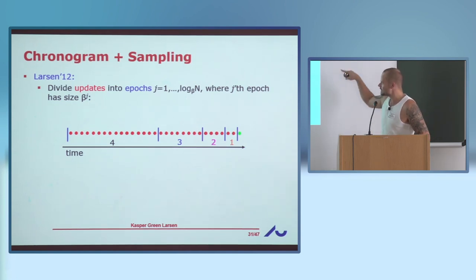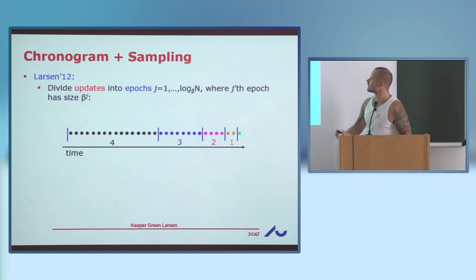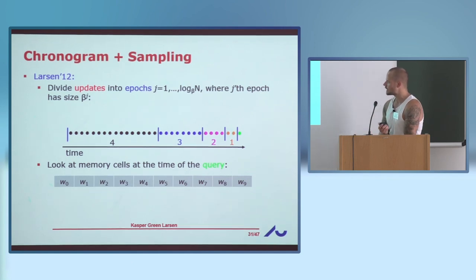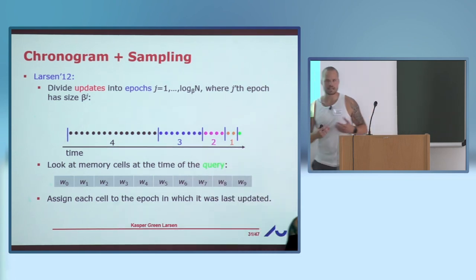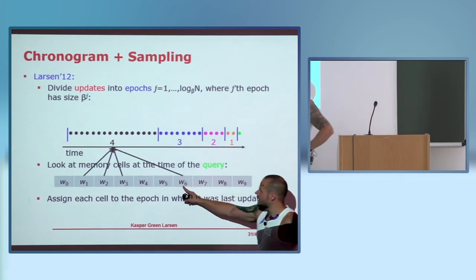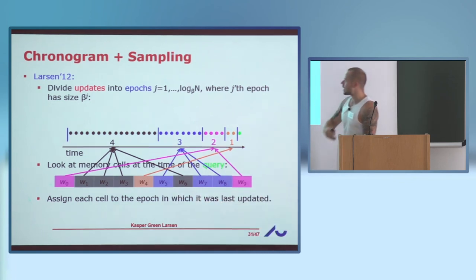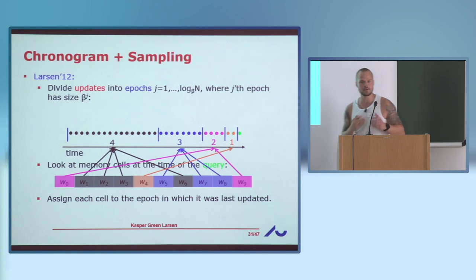The insertions belong to epochs colored black (fourth epoch), blue (third), purple (second), and orange (first). When you're done processing all these operations and need to answer the query, you color each memory cell based on which epoch it was last updated in. Cells updated during the fourth epoch but not the later ones are colored black; cells last updated during the blue epoch but not the purple or orange ones are colored blue; and so on — coloring is based on the last time it was written.